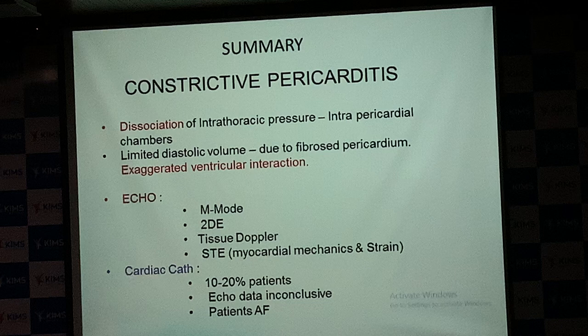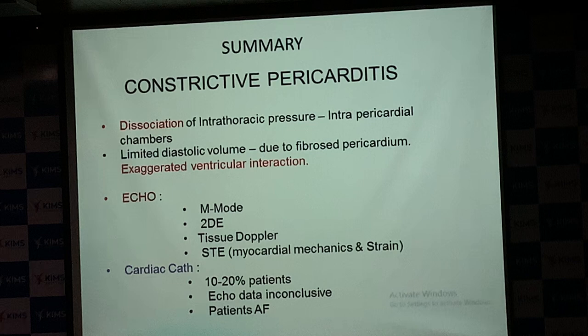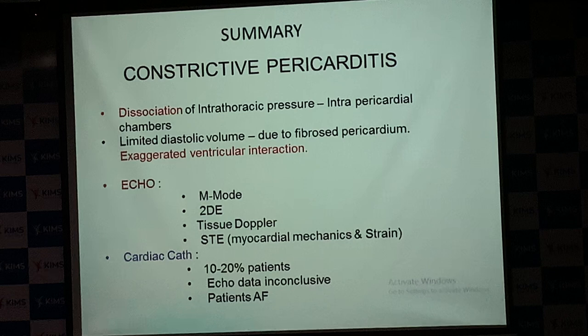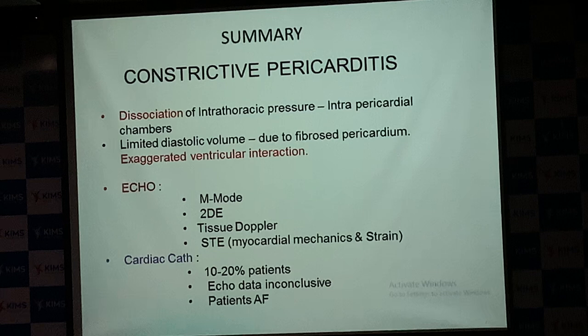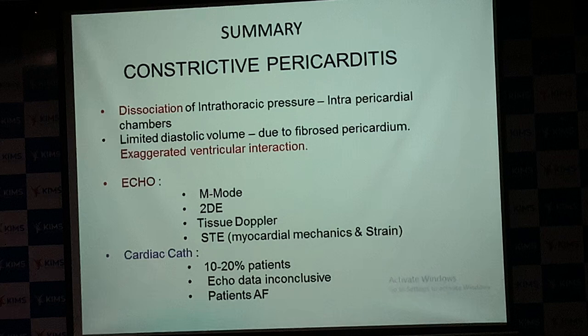In summary: dissociation of intrathoracic from intrapericardial chamber pressures is one defining characteristic of constrictive pericarditis. Due to limited diastolic volume from fibrosis, there is an exaggerated ventricular interaction — the second defining characteristic. Many of these features can be demonstrated on well-done echocardiography with ECG reference and respirogram. Cardiac catheterization is rarely needed — perhaps less than 10% of patients — when echo data is inconclusive, in atrial fibrillation, or when coronary artery assessment is needed.